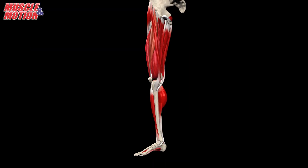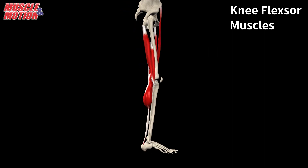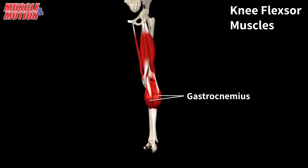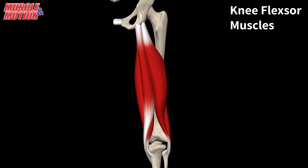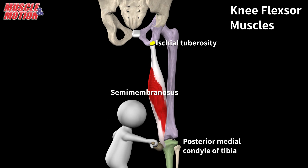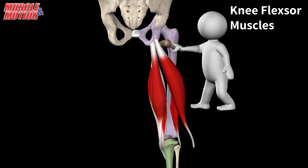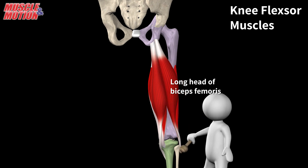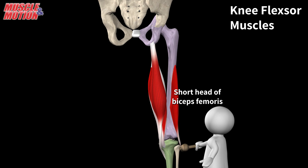Now let's review the knee flexor muscles. The primary knee flexor muscles are the hamstrings, assisted by the sartorius, the gracilis, the gastrocnemius, and the popliteus. The hamstrings muscle consists of three long separate muscles. These muscles originate from the ischial tuberosity and insert below the knee joint. The semimembranosus inserts into the posterior medial condyle of the tibia. The semitendinosus inserts into the medial surface of the proximal tibia. The third muscle is the biceps femoris, which has two heads — the long head inserts into the head of the fibula. The biceps femoris short head does not originate with the rest of the hamstrings; it originates from the posterior femur and inserts into the head of the fibula.